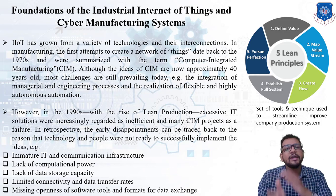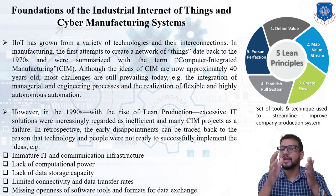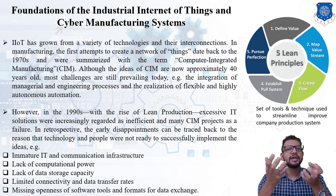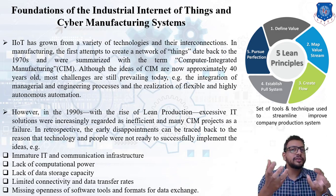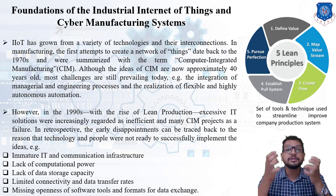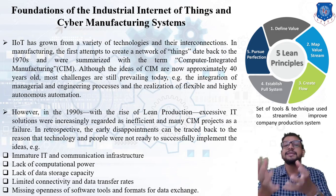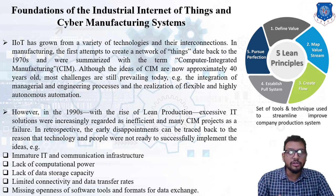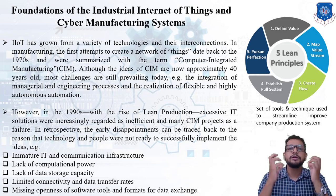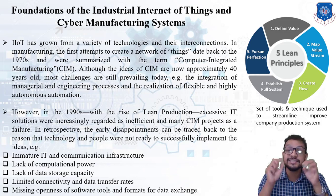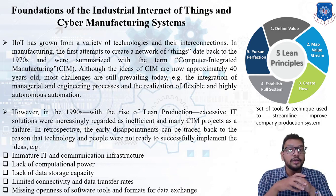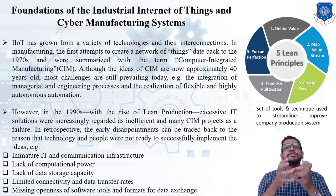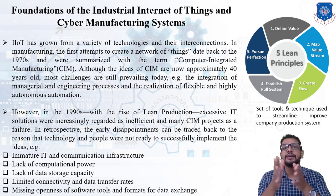IIoT has grown from a variety of technologies and their interconnection in manufacturing. The first attempt for creating a network of things was during 1970, summarized under the name CIM — Computer Integrated Manufacturing. Although the CIM idea is 40 years old, most of the challenges are still present, for example, integration of managerial and engineering processes, and the realization of flexible and highly autonomous automation.